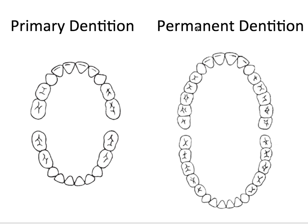We've been talking about the permanent dentition thus far, but we also have the primary dentition. The primary dentition basically refers to the baby teeth or the primary teeth. This would start around six months, which is typically when you'll start getting these teeth to erupt, usually starting with the lower incisors. The baby teeth will come in one at a time until you finally get a full set of primary dentition.